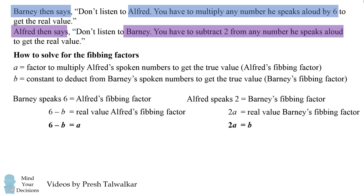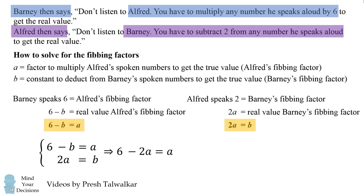So we now have a system of two equations in two variables: six minus B is equal to A, and two A equals B. We can use the second equation and substitute it into the first. So we have B equals two A, therefore six minus two A is equal to A, which then means six is equal to three A, or A is equal to two. Since B is equal to two A, that means B is equal to four. So we've solved for the fibbing factor of each person.